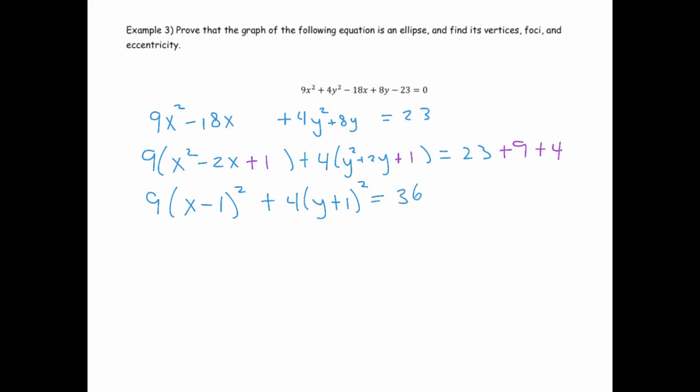This becomes 4 times y plus 1 squared, and on the right-hand side I get 36. So now I'm going to want to divide. In order to put it in standard form, we need there to be a 1 on the right side. So, this becomes x minus 1 squared divided by 4 plus y plus 1 squared divided by 9 equals 1. So there's my equation.